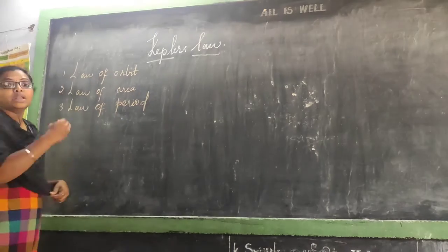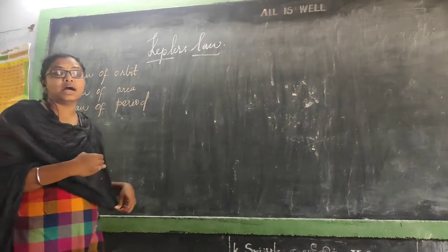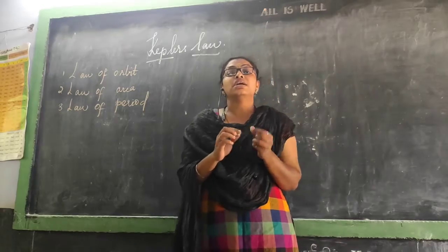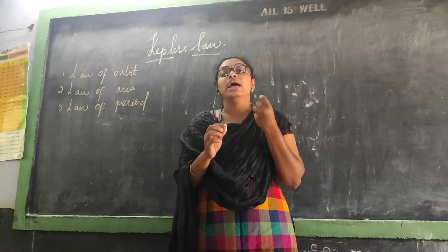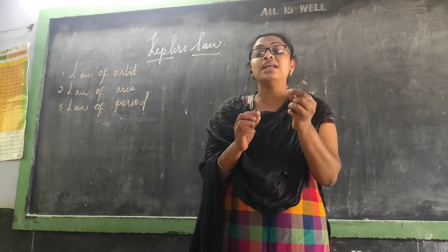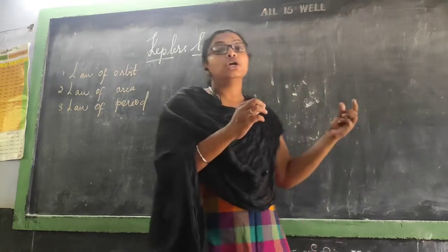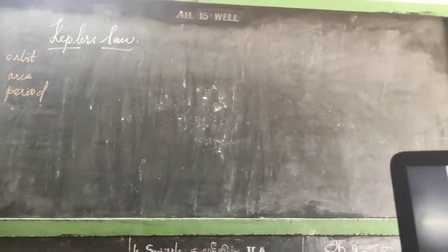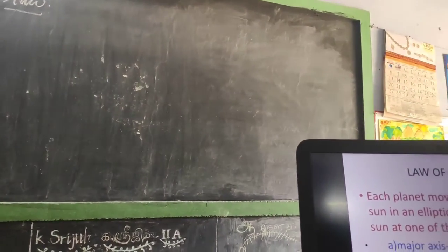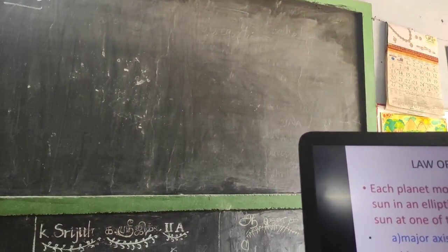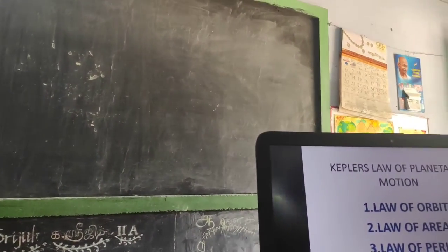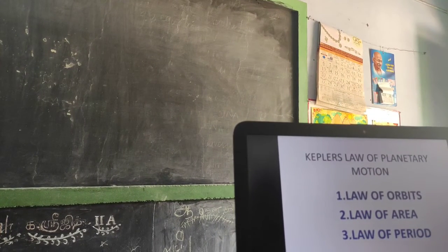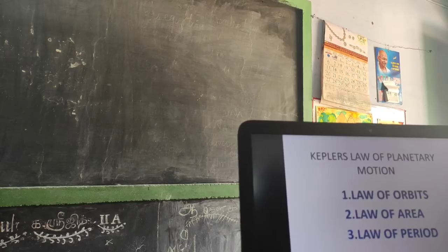There is a connectivity between all these three laws, and it shows that planets move around in an elliptical orbit with the sun at the center point. The three laws are: law of orbit, law of area, and law of period.